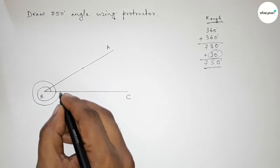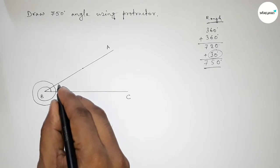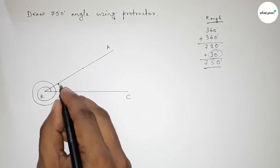So total 720-degree angle, and this is plus 30 degrees. So this is total 750-degree angle.